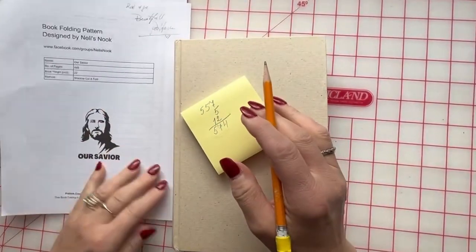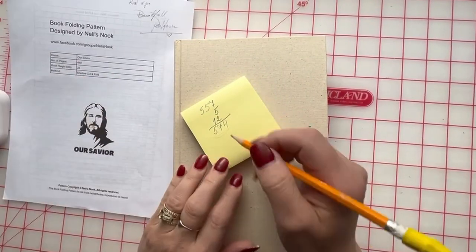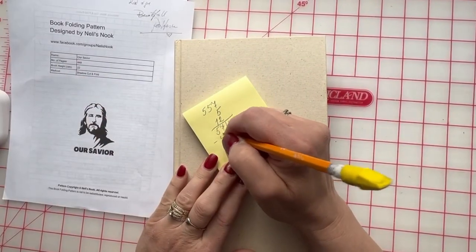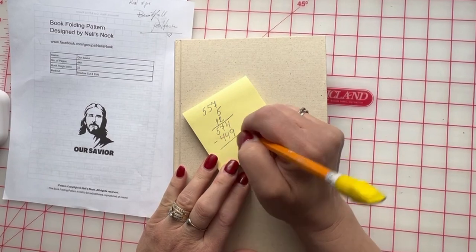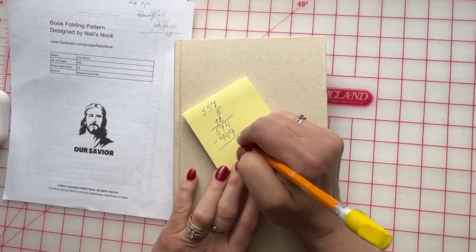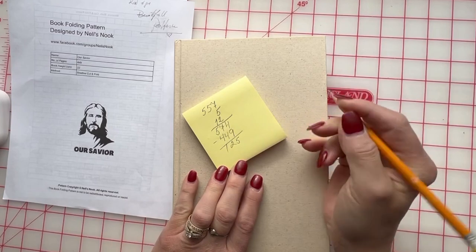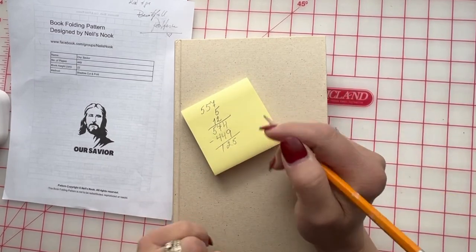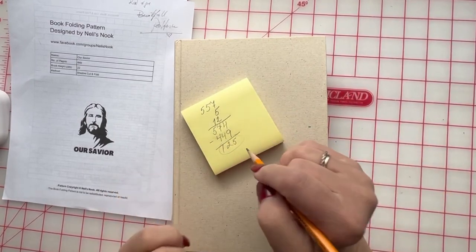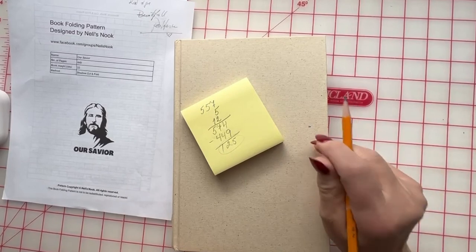However, my pattern is asking for only 449 pages. So let's subtract 449 pages and that will give me 120. Okay, so those are extra pages. I have 125 extra pages in this book.